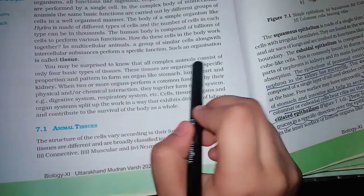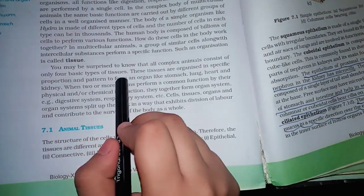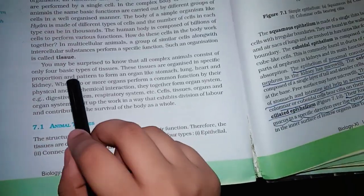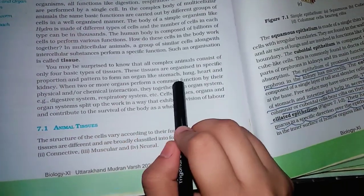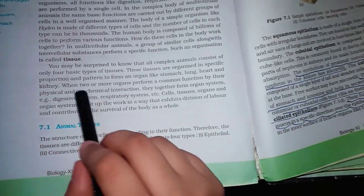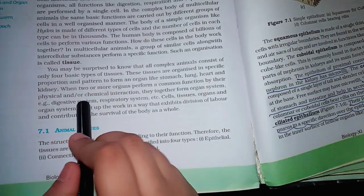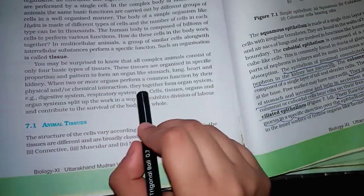These tissues are organized in specific proportion and pattern to form an organ like stomach, lung, heart and kidney. When two or more organs perform a common function by their physical and or chemical interaction, they together form organ system, i.e. digestive system, respiratory system, etc.